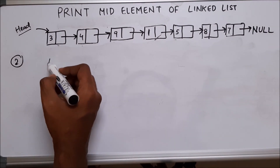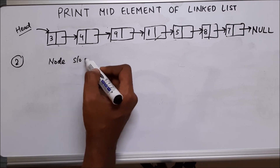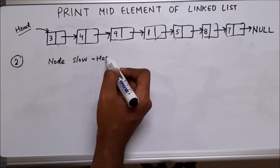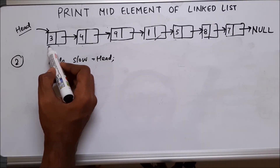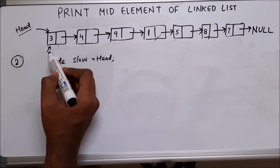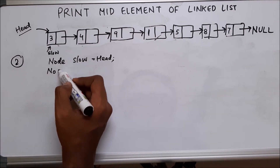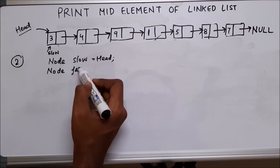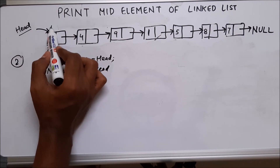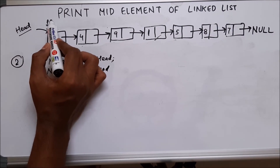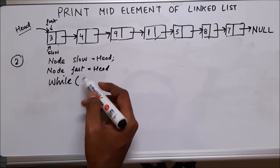Let's create those two pointers. Node slow equals head — by this line, we are pointing slow to the first node. Now we will need one more pointer: node fast, which will also point to head. Now we will use a while loop to traverse the linked list.